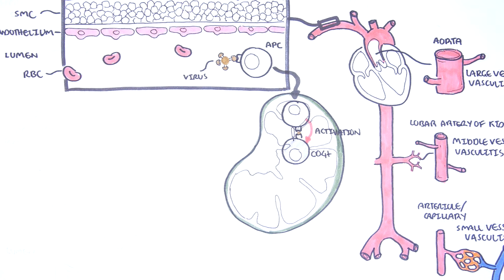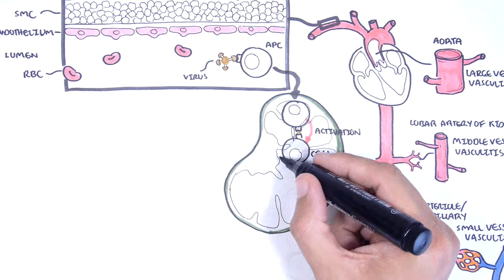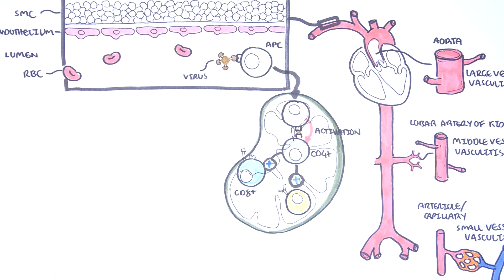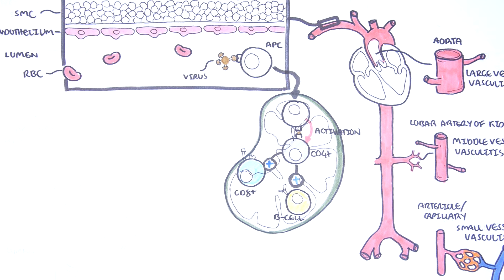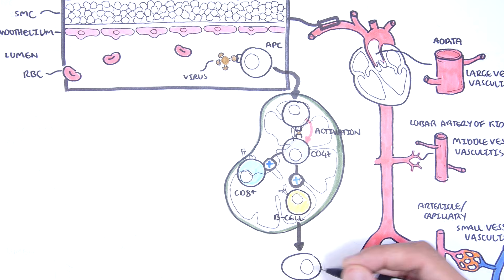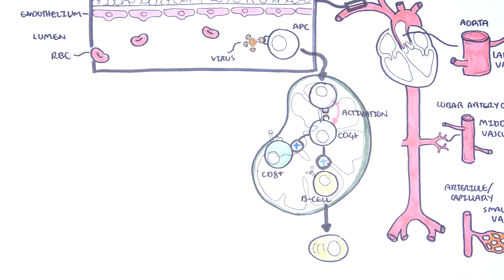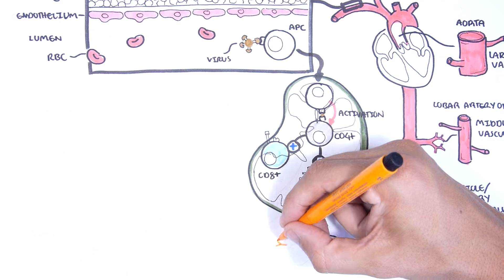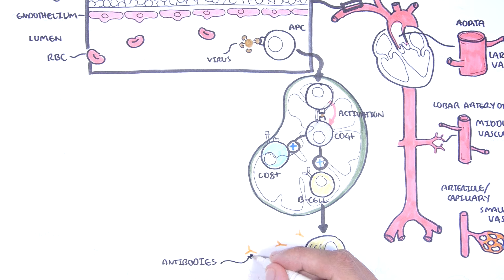Activated CD4 lymphocytes, which are also called T-helper cells, then activate cytotoxic CD8 T lymphocytes and also B-cells. Activated B-cells mature and become plasma cells, the cells responsible for producing antibodies. The antibodies produced should target the pathogen. However, in vasculitis the antibodies may cross-react to the blood vessel because of molecular mimicry between the antigen of the pathogen and the blood vessel layers.